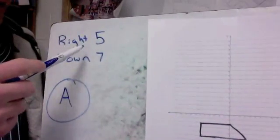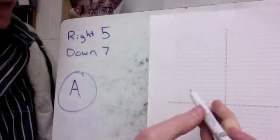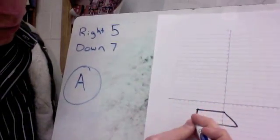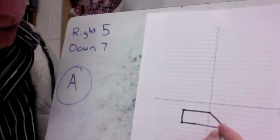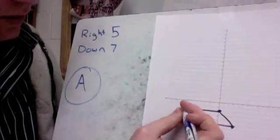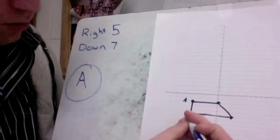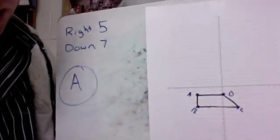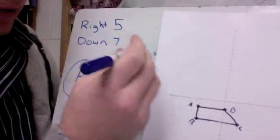If you're here, we'll translate it 5 right and down 7. So I'm just going to make sure my dots that I'm looking for are nice and clear, and then I'll just go A, B, C, D. Everything here needs to go right 5 down 7.